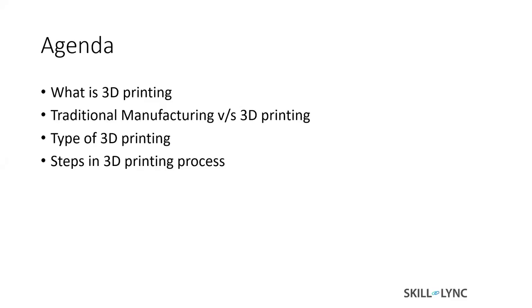Today's session agenda is going to discuss what 3D printing is. We are going to discuss a couple of manufacturing methods, compare those to 3D printing, and define what 3D printing is. We are going to discuss what traditional manufacturing limitations are and how 3D printing solves that, what kind of advantages you get with 3D printing, and compare it in terms of cost. After that, we will discuss different kinds of 3D printing processes, and then at the end, we will discuss different steps in a typical 3D printing process in a generalized way.